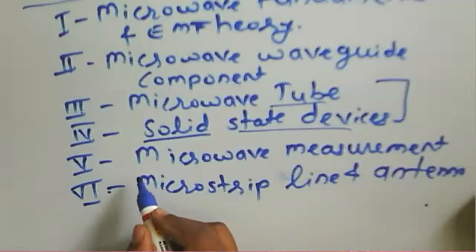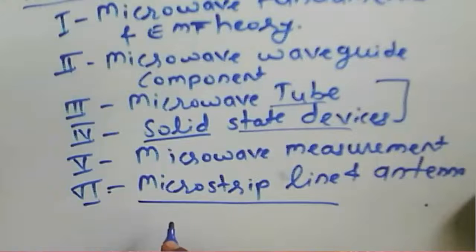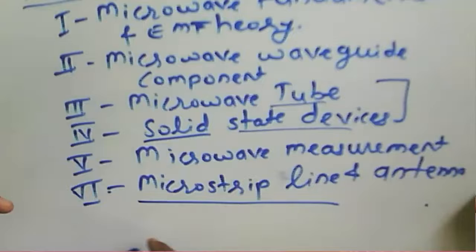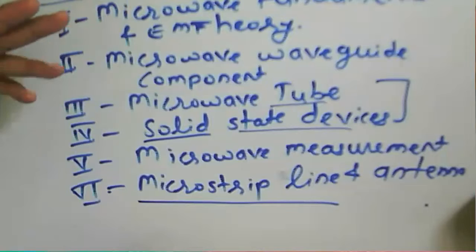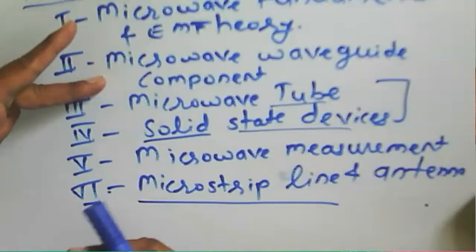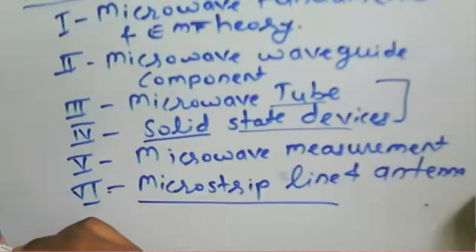Module 6 is about microstrip line and antenna. Today microstrip line is used everywhere — even in a mobile phone, which has a microstrip antenna. We will learn how the microstrip antenna works, how it is used, and how to design it. Overall, the course starts with microwave fundamentals, then transmission media, signal generation, measurement, and transmission to the antenna.